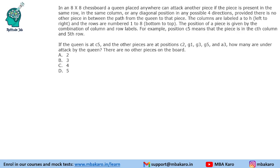Hello everyone, welcome to Aptitude Jab. This set from CAT 2017 slot 2 DILR involves an 8x8 chessboard. There is a queen placed anywhere. It can attack another piece if the piece is present in the same row, in the same column, or any diagonal position in any four possible directions, provided there is no other piece in between the path from the queen to that piece.